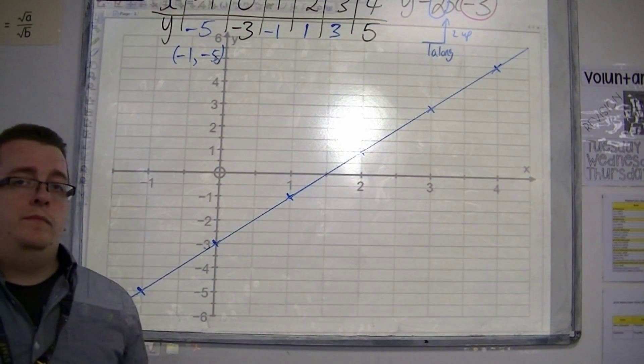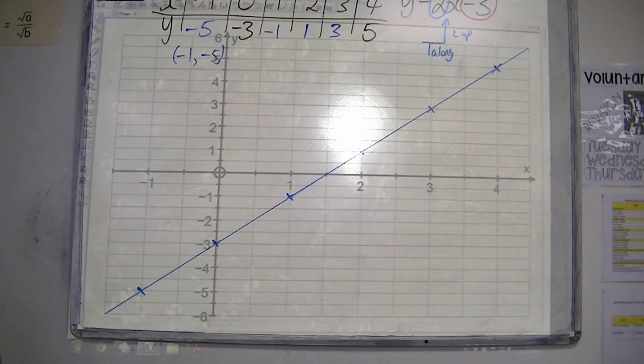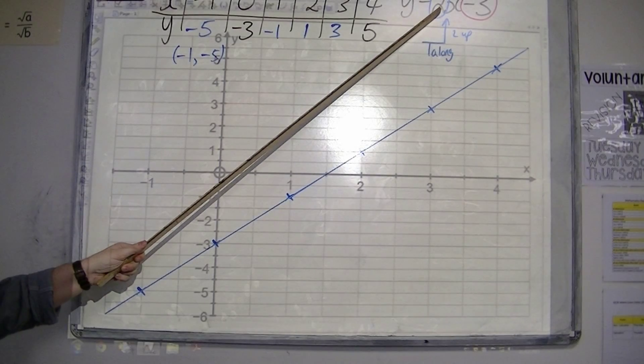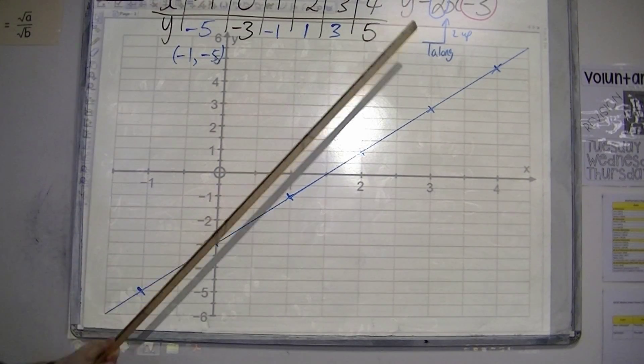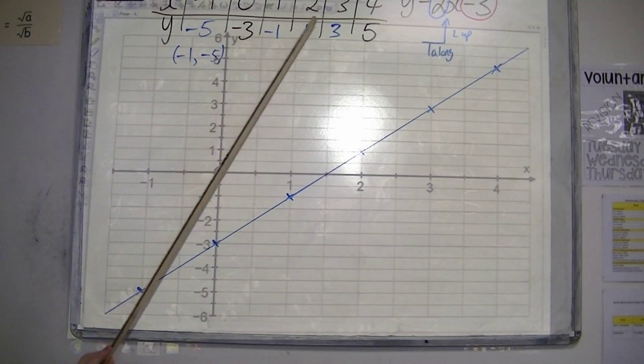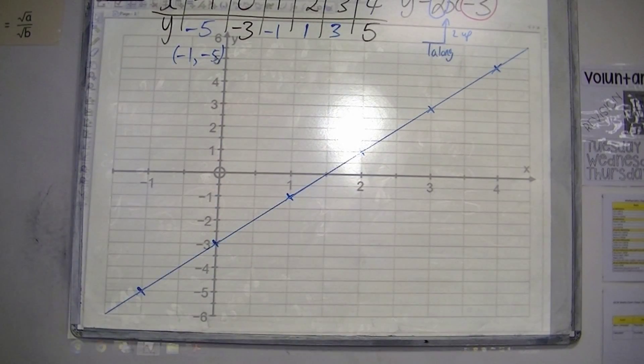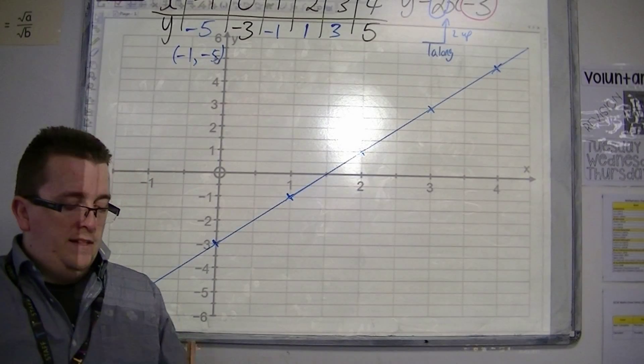And there we are. Very easy. Identify that for every one along, you must be going 2 up, because that's the number in front of the x. Then you can fill in the rest of the table, plot the points, draw the line.